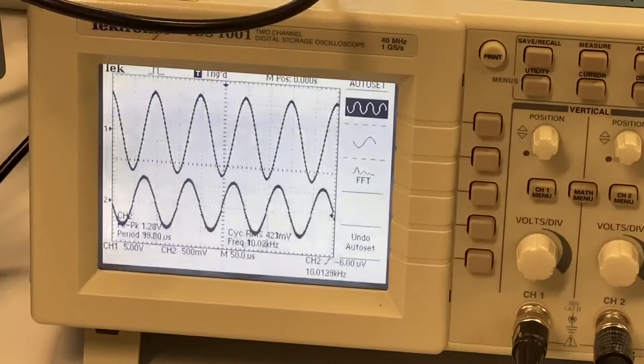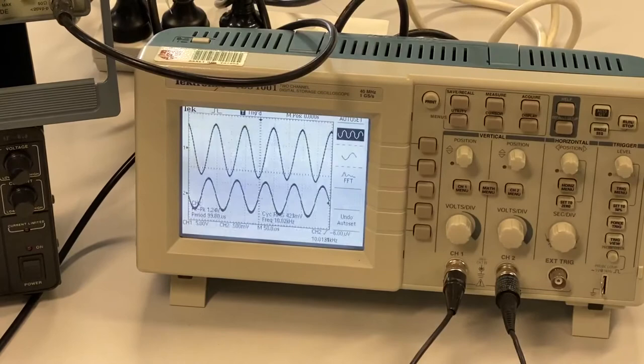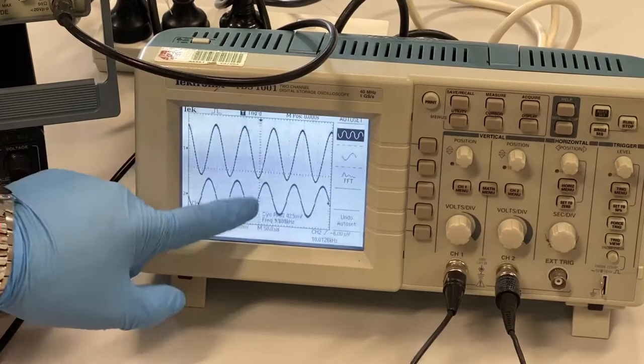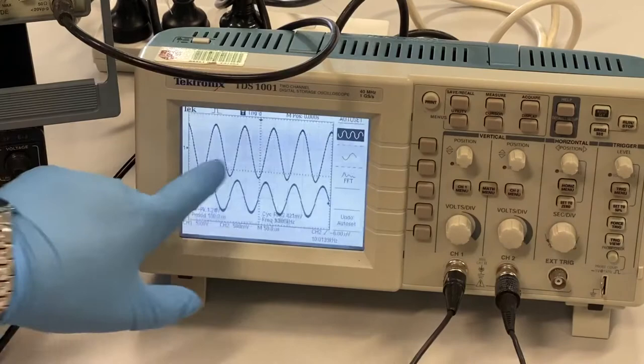What we have to do is we have to now check the phase difference. How do we check the phase difference? We use a knob called cursor. We choose two cursors. So there are two types of cursors on the oscilloscope. There's one we call an amplitude cursor that measures the differences in the voltages in the amplitude y-axis. Then there's what we call the time cursor that measures the differences in the x-axis, which is the time axis.